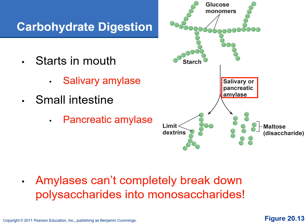For carbohydrate digestion, make sure you note that it actually starts in the mouth with salivary amylase, which begins breaking the carbohydrates into smaller pieces. But when you swallow your food and it enters the stomach, the stomach pH is very acidic at a pH of 2, and that actually inactivates the salivary amylase. So when the food moves into the small intestine, the pancreas will then secrete pancreatic amylase, which will continue breaking down the carbohydrates. Unfortunately, the amylases can't completely break down the polysaccharides into monosaccharides.